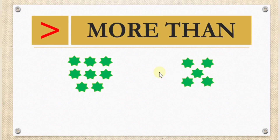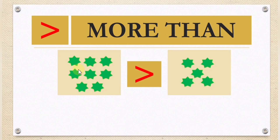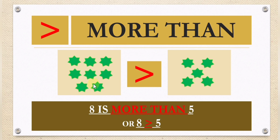More than. How many are inside the first box? One, two, three, four, five, six, seven, eight. The second box: one, two, three, four, five. If we are going to read it: eight is more than five. Or it can be written like this — eight is more than five. Because eight is a greater number compared to five.